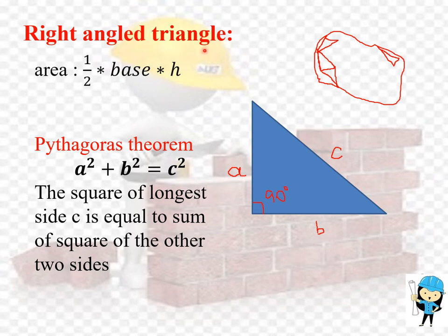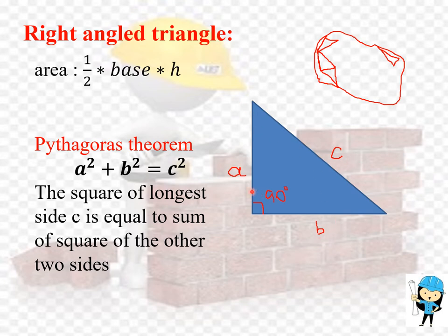Now we are going to calculate the formula for the right angle triangle. The formula to calculate the area of the right angle triangle is: half into base into height. If we don't know the sides of the triangle — that is, A or B is unknown — by using the length of C, we can calculate the length of A or B using the Pythagorean theorem: A squared plus B squared is equal to C squared, where C is the hypotenuse.